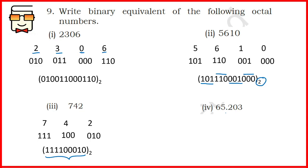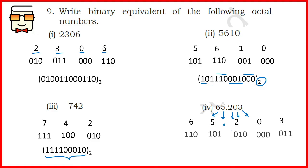The last part of question 9 is again a fractional number. You deal with it the same way as the non-fractional part — write the binary equivalent of all digits regardless of whether they lie to the right or left of the point. Each octal digit gets a corresponding binary representation of three digits. Write each representation, include the point, and club them together as a single answer.